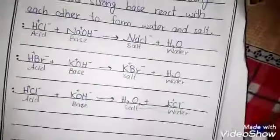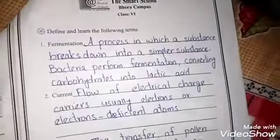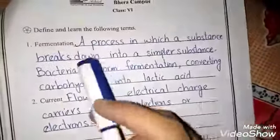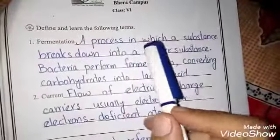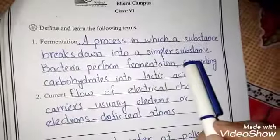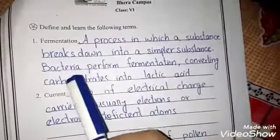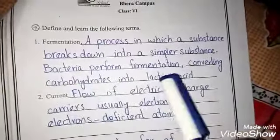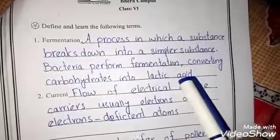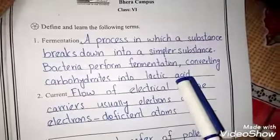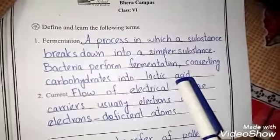On the next page we have some definitions. First is fermentation: a process in which a substance breaks down into a simpler substance. Bacteria perform fermentation, converting carbohydrates into lactic acid. This is a process where a substance breaks down and converts into a simpler substance.